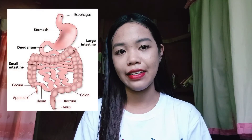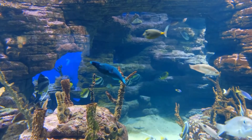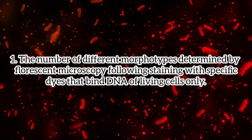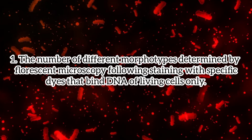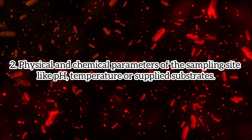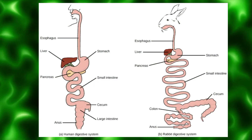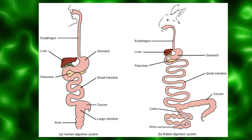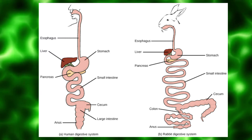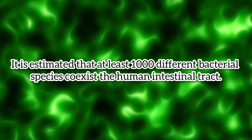The highest concentration of microorganisms and metabolic activity is found in the large intestine. Microbial diversity can be initially estimated from the number of different morphotypes determined by fluorescent microscopy following staining with specific dyes that bind DNA of living cells, as well as physical and chemical parameters of the sampling site like pH, temperature, or supplied substrate. The gastrointestinal tract of mammals maintains a highly diverse microbial population that plays an important role in nutrition, metabolism, protection against pathogens, and development of the immune system. It is estimated that at least 1,000 different bacterial species co-exist in the human intestinal tract.